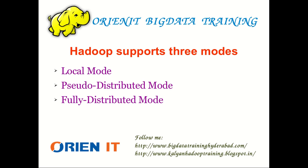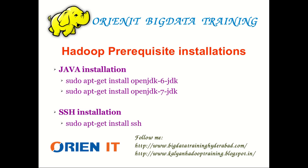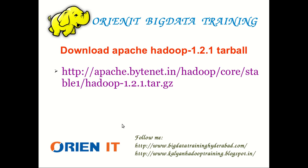The prerequisite is Java, either version 1.6 or 1.7. The command to install Java in Ubuntu is: sudo apt-get install openjdk-6-jdk for Java 1.6, or sudo apt-get install openjdk-7-jdk for Java 1.7. After Java installation, SSH is also required. The installation command for SSH is: sudo apt-get install ssh. Once these are completed, we'll download the Apache Hadoop 1.2.1 tarball.